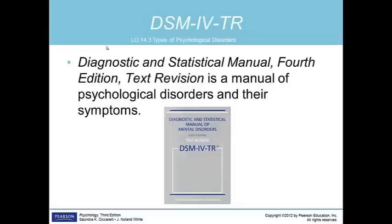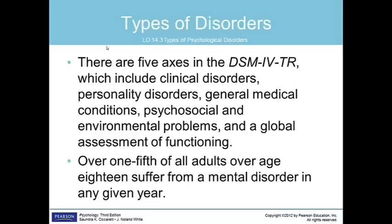After we have reached a conclusion and are ready to make a diagnosis, those in the psychology field use the Diagnostic and Statistical Manual, 4th Edition Text Revision, or the DSM-4TR, to diagnose their clients with specific disorders. The DSM lists approximately 400 mental disorders if you include the subcategories. It lists the criteria for diagnosing each disorder and the key clinical features. There are five axes in the DSM-4TR which include the clinical disorders, personality disorders, general medical conditions, psychosocial and environmental problems, and a global assessment of functioning.